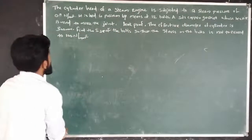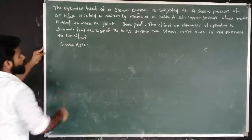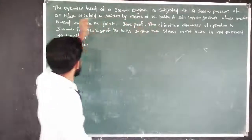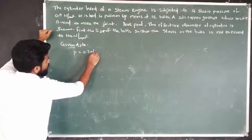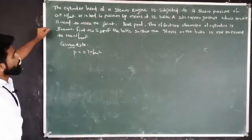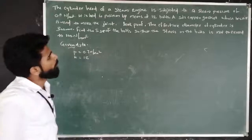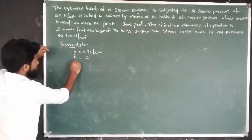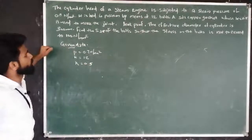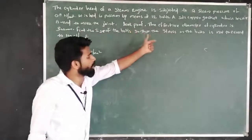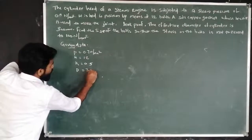Let us discuss the given data. Steam pressure: p = 0.7 N/m². Number of bolts: N = 12. Stiffness constant for the soft copper gasket: K = 0.5. The effective diameter of the cylinder is 300 mm.